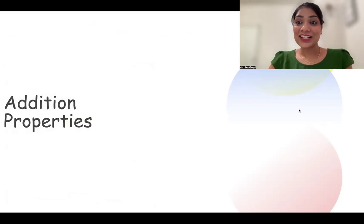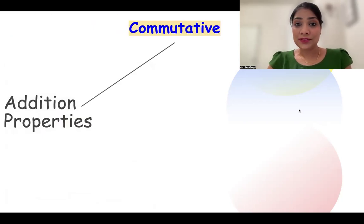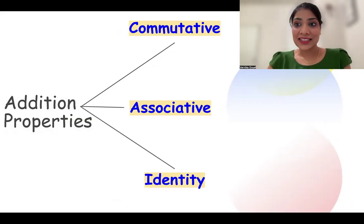We are going to learn three addition properties: commutative property, associative property, and identity property. The names sound so scary, but trust me, by the end of the lesson, you will be the master of it and you will find them super easy.